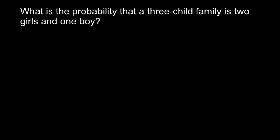Today's problem is: what is the probability that a three-child family has two girls and one boy? First, we can consider that all three children would be girls — girl, girl, girl. Another possibility is that all three children would be boys — boy, boy, boy. And the probability of such an event would be calculated as follows.